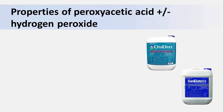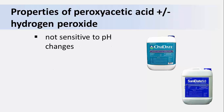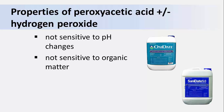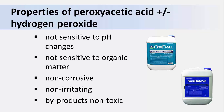Sanitizer products that contain peroxyacetic acid with or without hydrogen peroxide are generally more expensive than chlorine or chlorine dioxide, but there are advantages to using them. They are not sensitive to pH or to organic matter. They are not corrosive and are non-irritating when used at the proper concentrations. And finally, their byproducts are non-toxic.